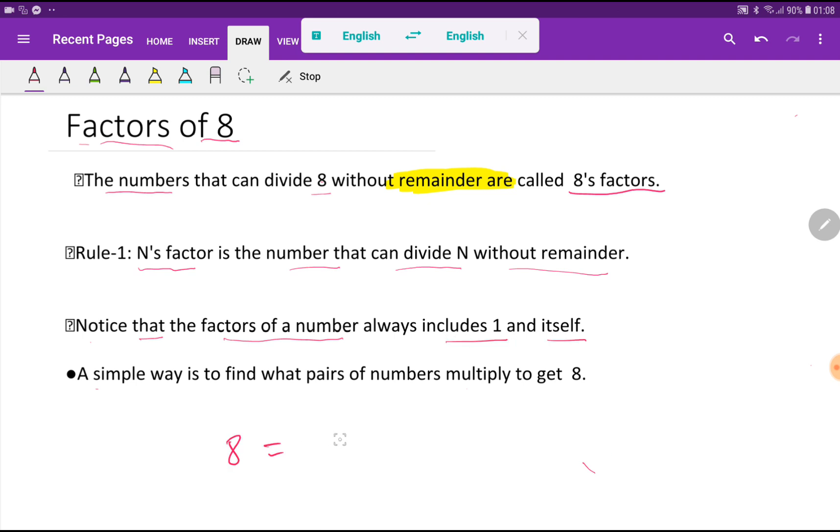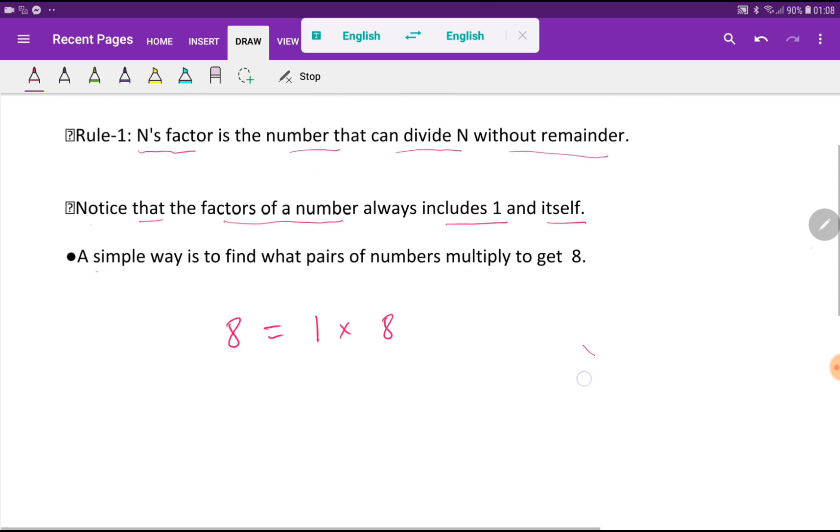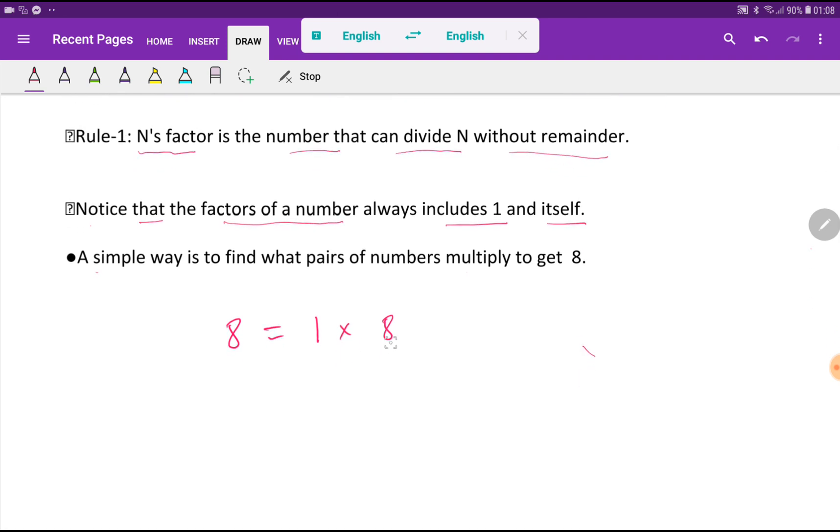So the factor of 8 will be 1 and itself, that is 8. A simple way is to find what pairs of numbers multiply to get 8. So if we multiply 1 and 8, then we will get 8. So 1 and 8 are the factors of 8.